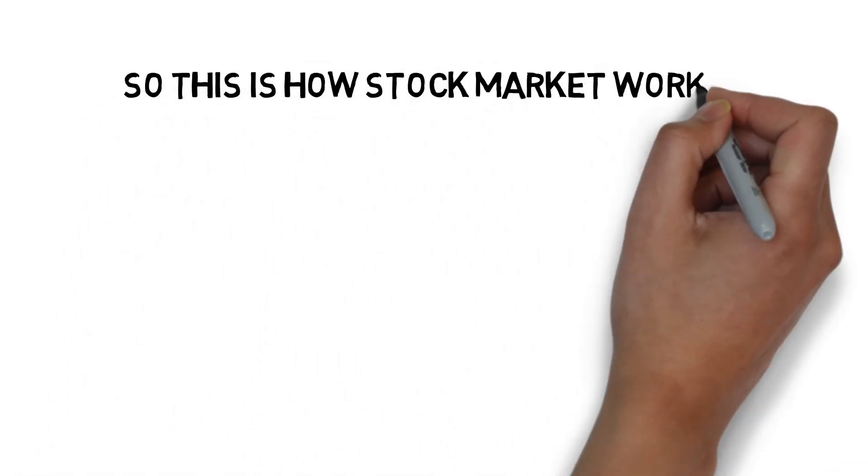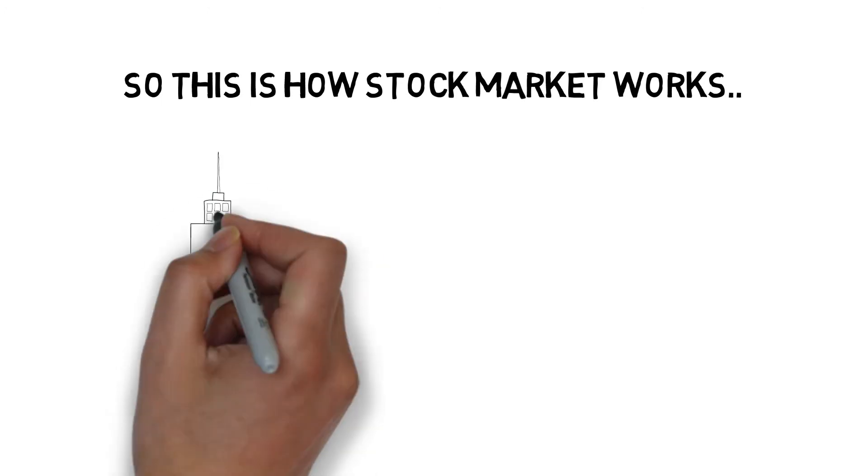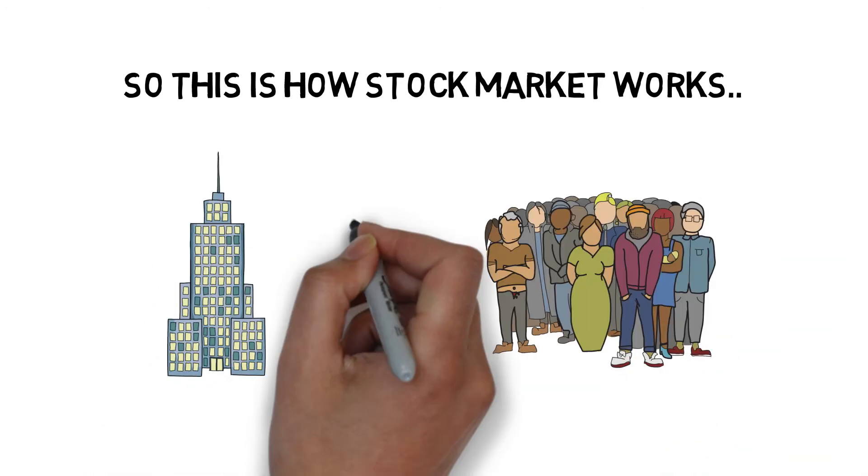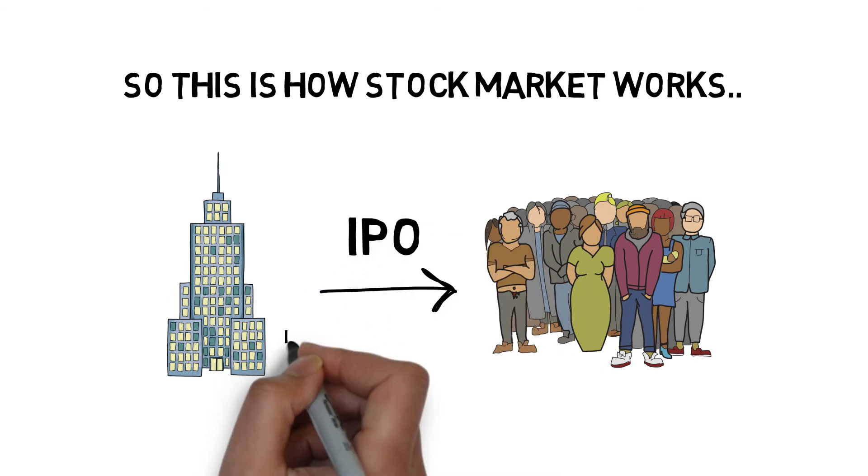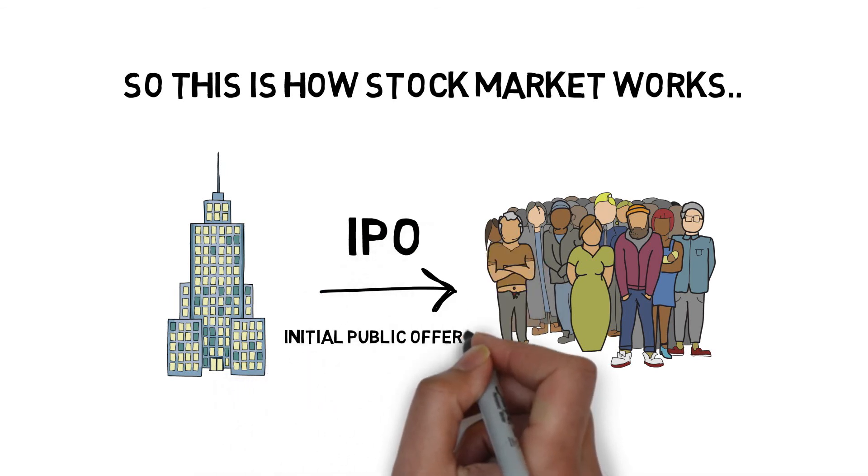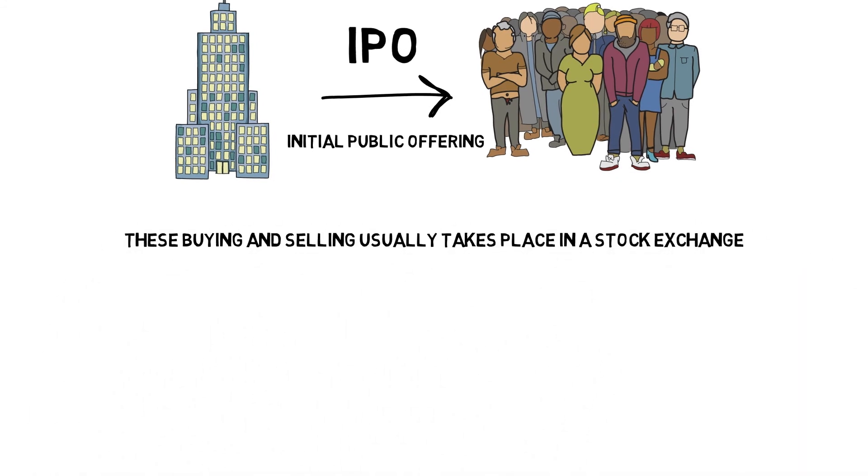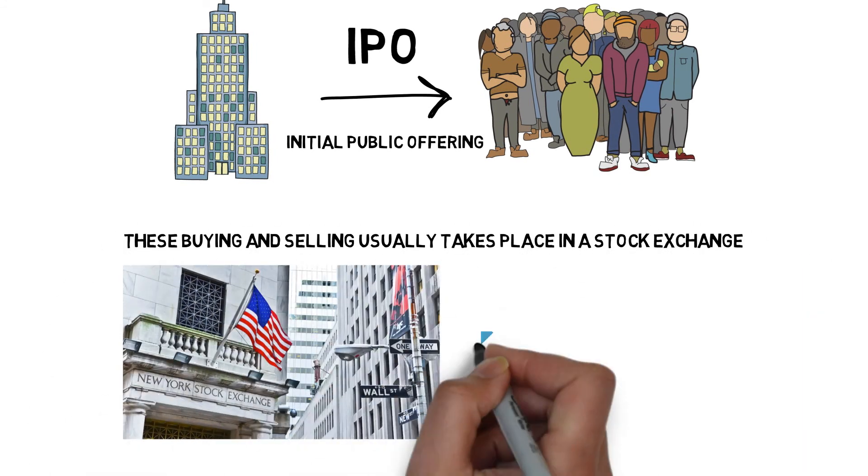Companies offer their initial shares to general public through what we call as IPO, or initial public offering. The company is no more private after that, and will be listed in stock exchanges as a publicly listed company where we buy and sell. Some of the common stock exchanges are New York Stock Exchange and NASDAQ.